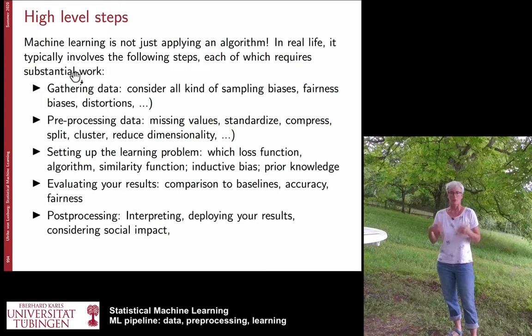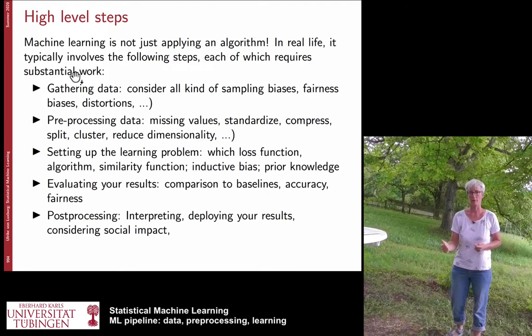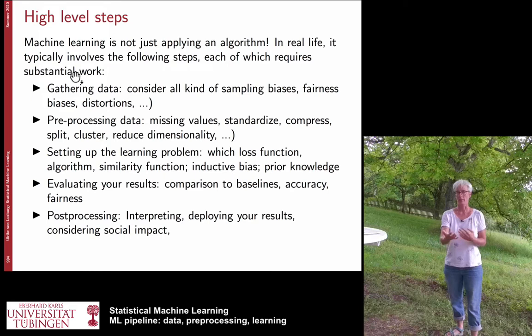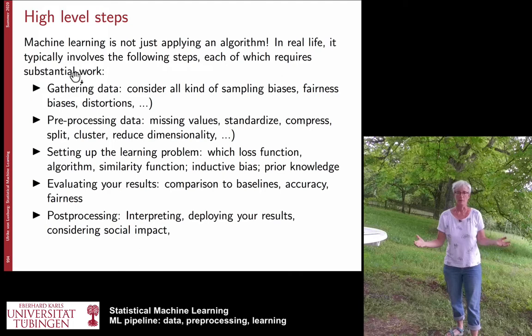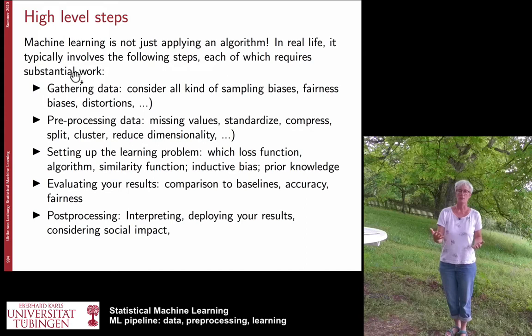The first step is gathering data. You might gather data on purpose, or you may need to reuse data that was never collected for this particular purpose. No matter how you do it, it will typically contain lots of sampling biases, possibly fairness-related biases as discussed in the fairness lectures, and many distortions. There might be missing values — many aspects of data collection are already difficult.